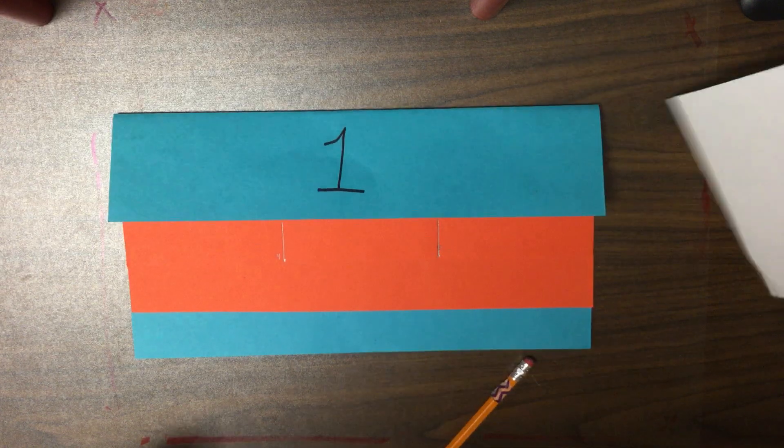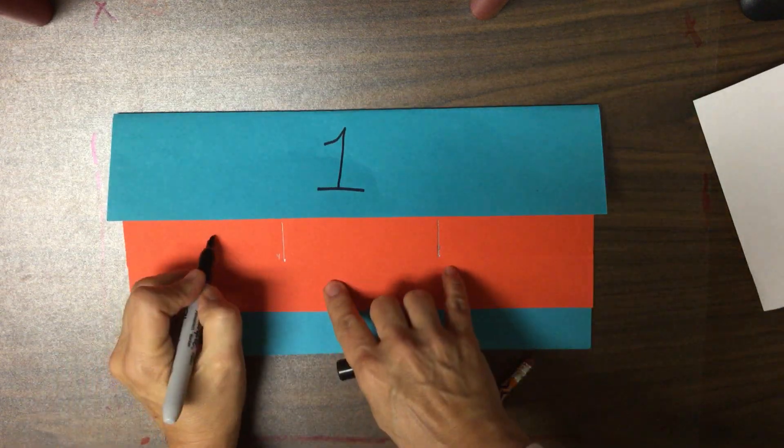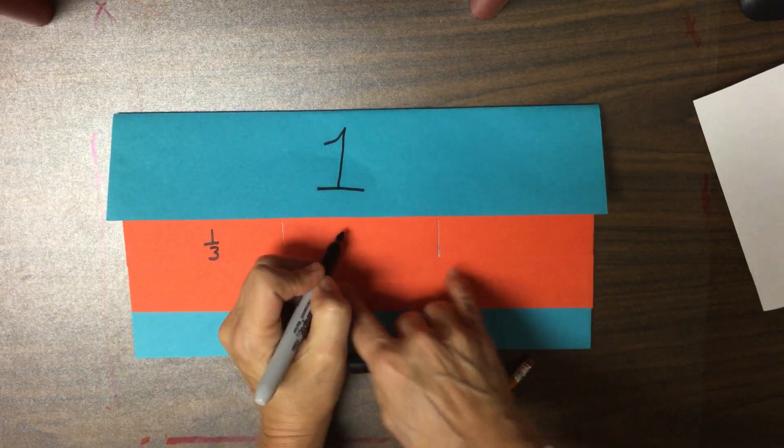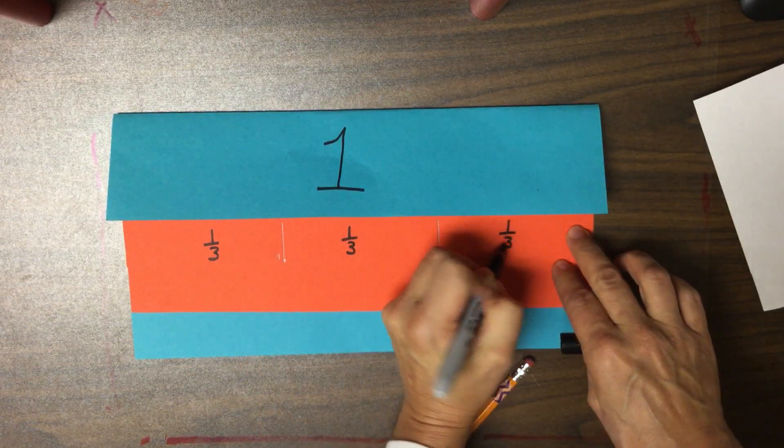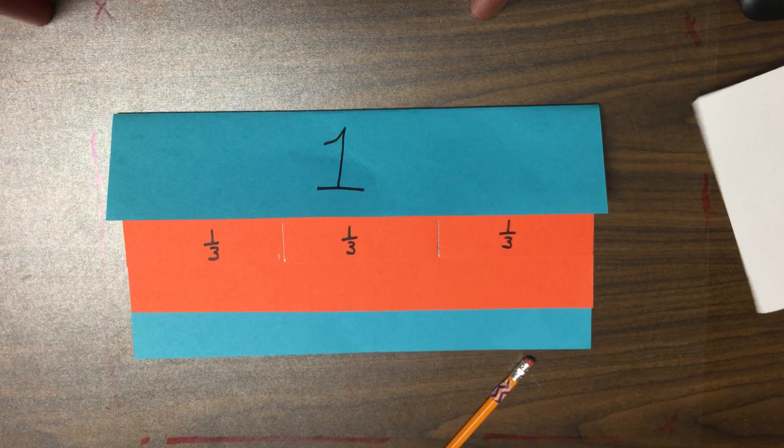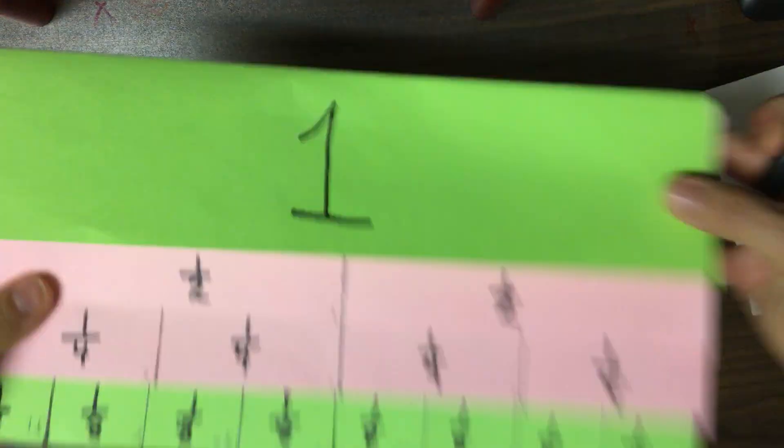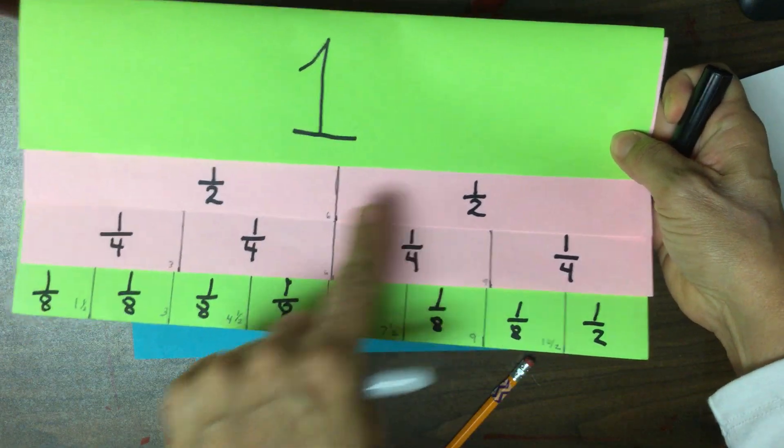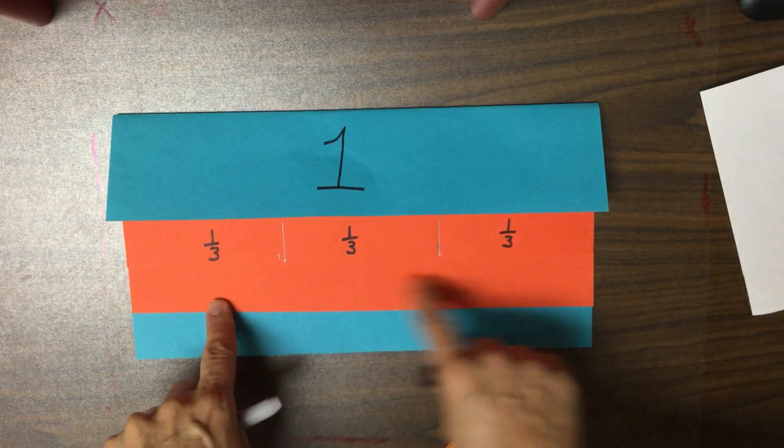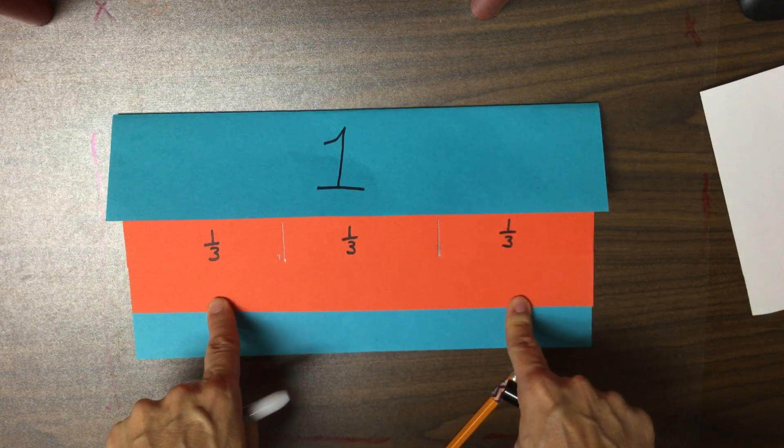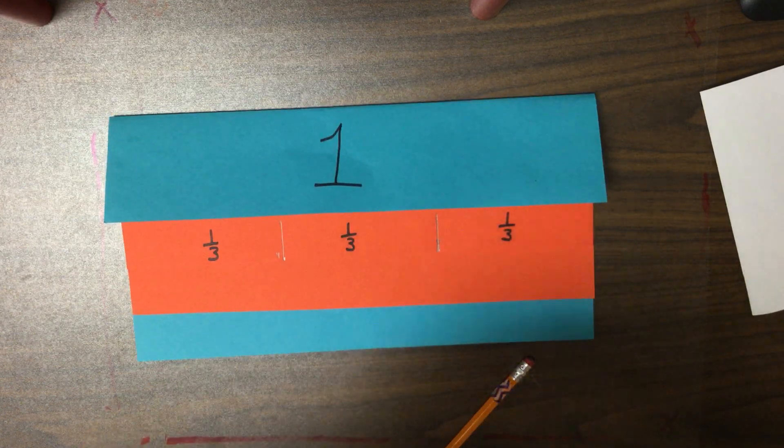So, now we have three equal parts so each of those parts will be labeled one-third. So, on this flip book we went from two parts to four parts. So, here we're going to go from three parts. What do you think this part will be? This will be divided into how many parts? Six parts.